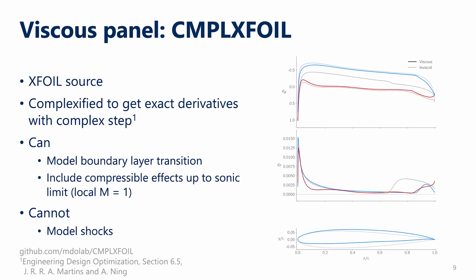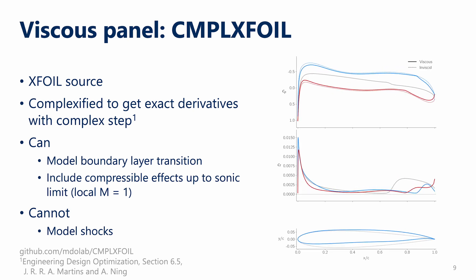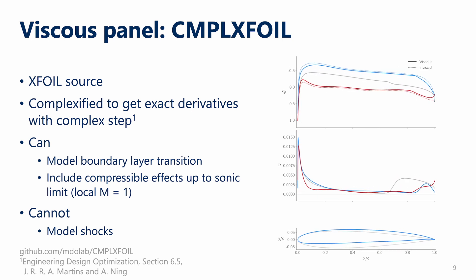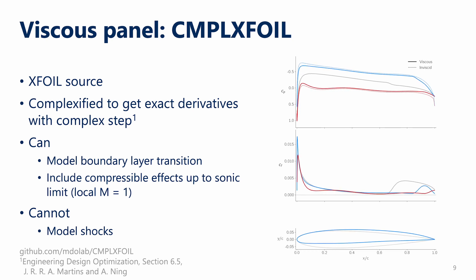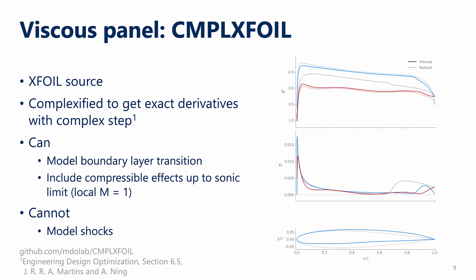The second flow solver we use is called ComplexFoil. It's a complexified version of the XFOIL source code, so all the models are the same as XFOIL. By complexifying it, we can use the complex step method to get exact derivatives for optimization. The complex step method is kind of like finite differences, except you step in the imaginary direction instead of the real direction — sounds kind of crazy, but it works really well. ComplexFoil can model boundary layer transition from laminar to turbulent. It also has a compressible correction, but it can't go beyond local flow speeds of Mach 1, meaning it can't model shocks or other important transonic effects.